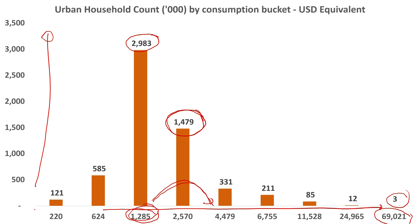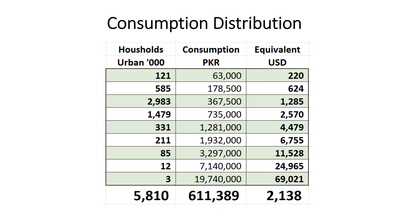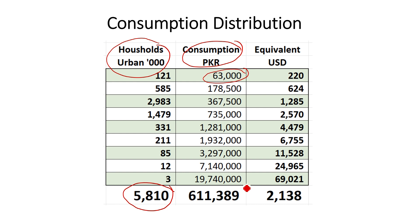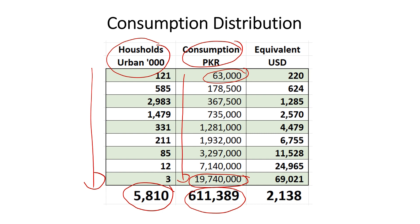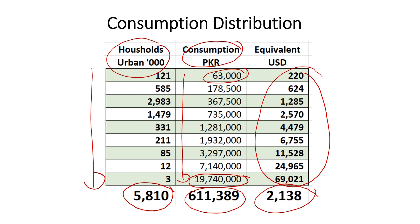Here's a quick summary in a simpler format. The first column presents the count of households — total 5.8 million urban households. The second column presents consumption buckets: the lowest slice is about 63,000 rupees a year, the biggest about 20 million rupees a year. The average across all segments is about 611,000 rupees, roughly 50,000 rupees per month. The third column converts this into USD — average consumption is about $2,200.